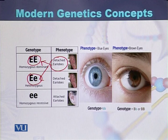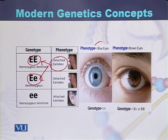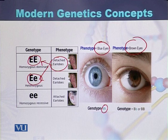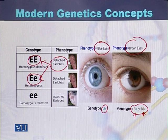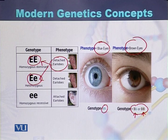Another example of genotype and phenotype is human eye color. In the case of blue eyes, the genotype is small b and small b. In the case of brown eyes, the genotype can be homozygous — both alleles similar — or heterozygous, with both alleles different from each other. This is the concept of genotype and phenotype at the molecular level.